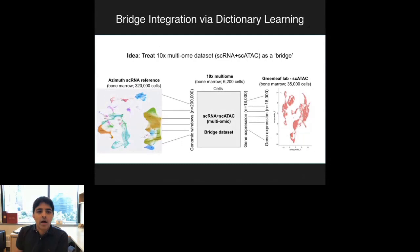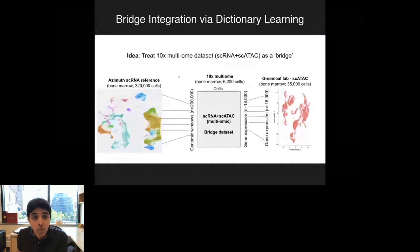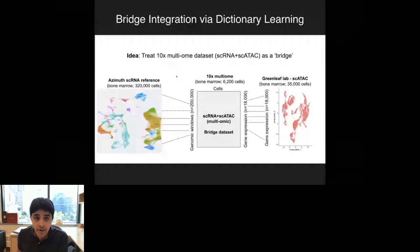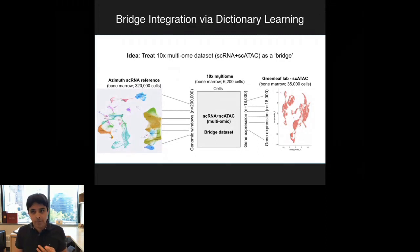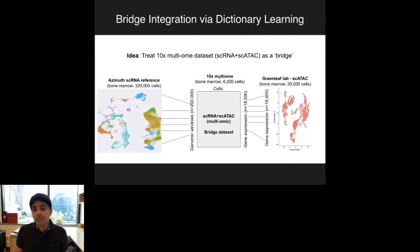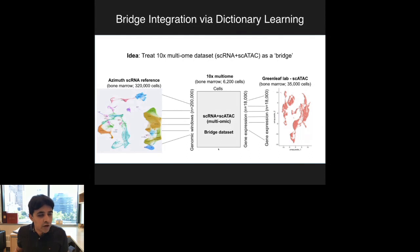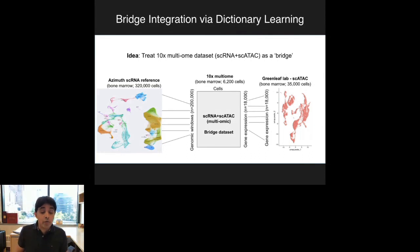So the basic idea: we want to map a single-cell ATAC-seq dataset where we measure peaks onto a single-cell RNA-seq dataset where we measure genes. The way we do this is by using a third dataset—a small one—where we measure RNA and ATAC together. For example, using the 10X multiome technology that enables simultaneous measurement of RNA-seq and ATAC-seq profiles. The multiome technology is somewhat expensive and lower throughput, but we can generate a few thousand cells. We use this multiome dataset as a bridge to map our ATAC-seq dataset onto our RNA-seq reference—that's why we call this bridge integration.